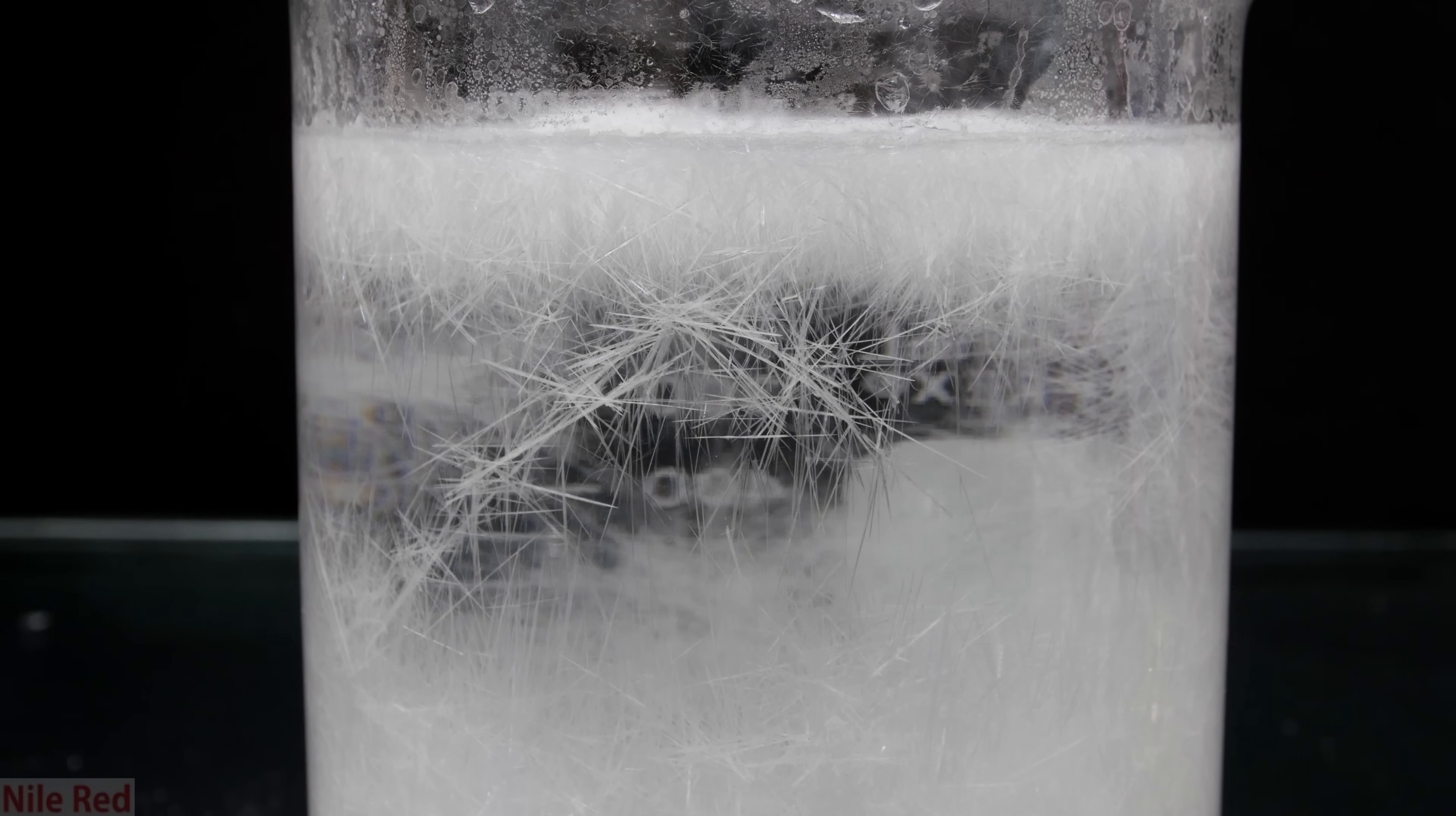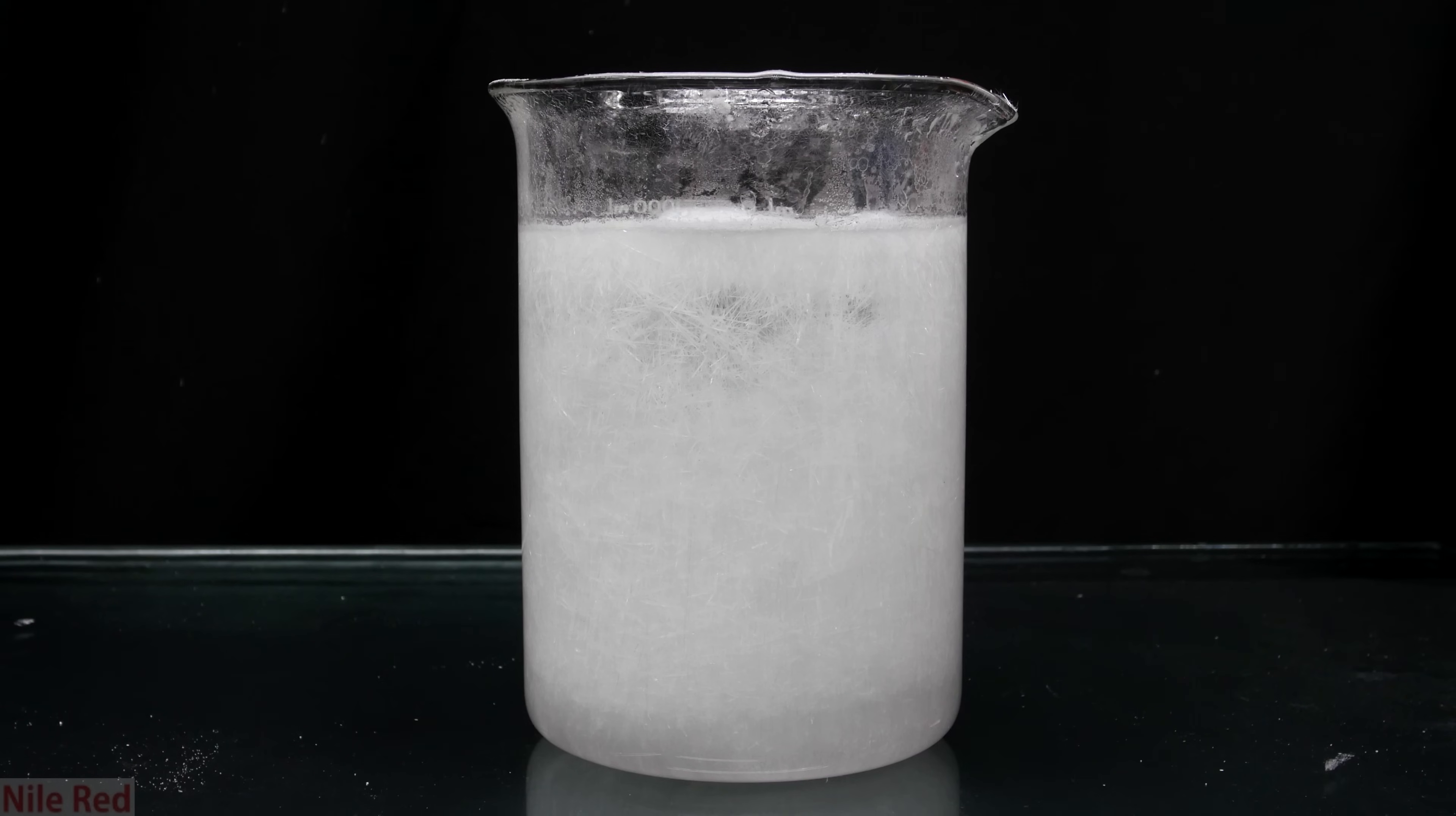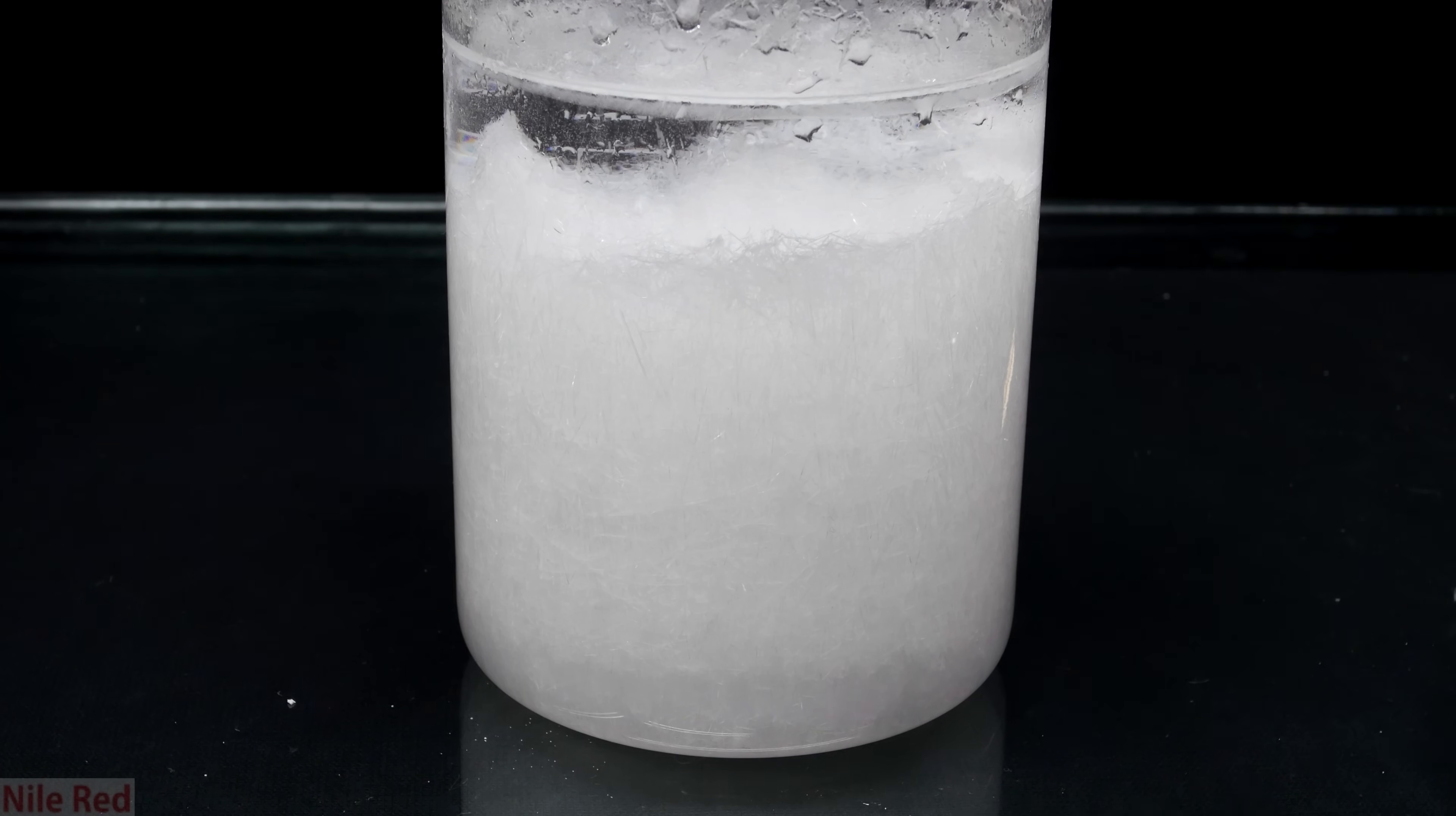Eventually, enough crystals form that it slowly takes over the beaker. Here we have a zoomed up shot of the needle-like benzoic acid crystals. After it's fully cooled to room temperature, it's completely taken over by crystals. To precipitate as many as possible, it's then placed into a freezer.